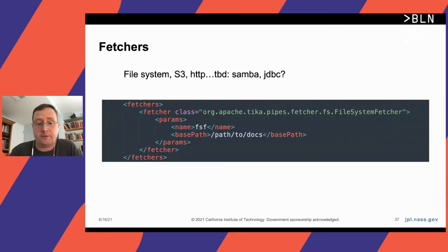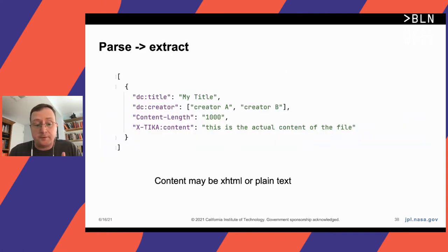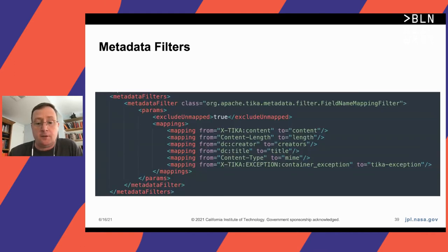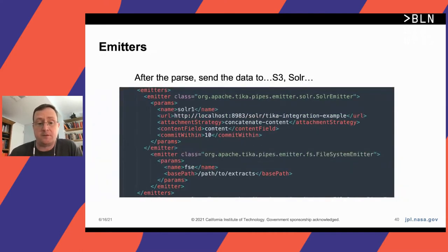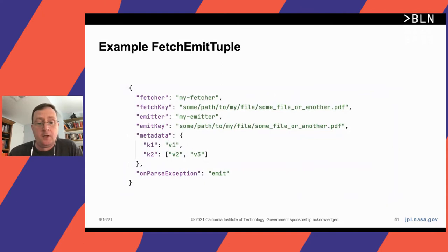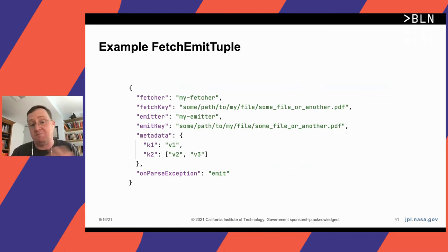Fetchers and emitters: the notion is that you fetch data from somewhere, do some processing, and emit the output. A file system fetcher, for example, has a name and a path to pull files from. The output is recursive metadata parser output where metadata and content are returned. We have metadata filters to map metadata names, and emitters — for instance, a Solr emitter that sends output to Solr, or a file system emitter. You can inject user metadata and specify what to do on a parse exception.